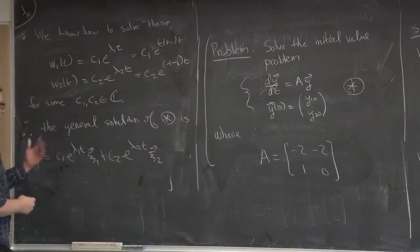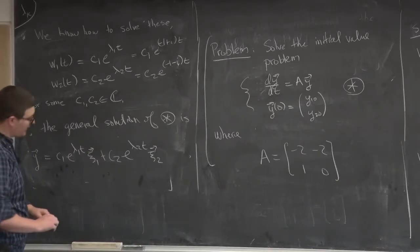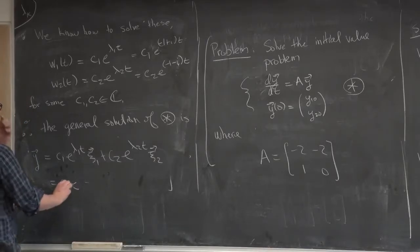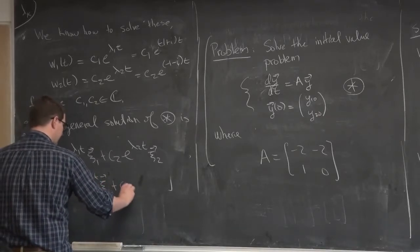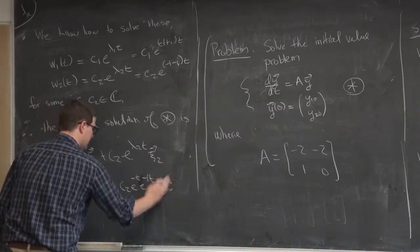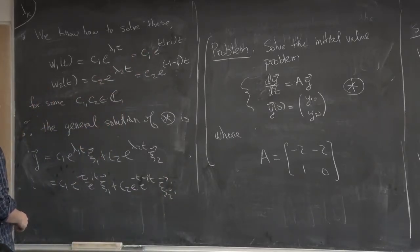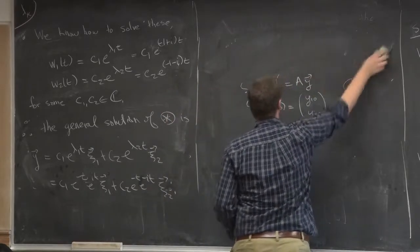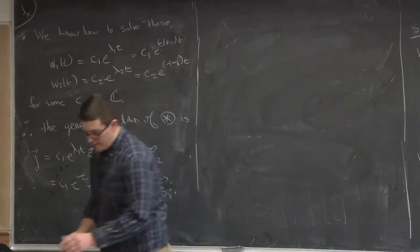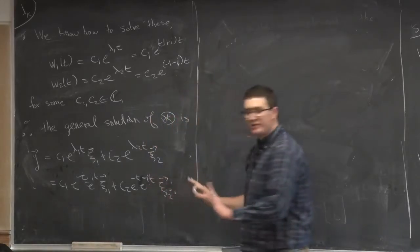So the general solution of ODE star is: y = C1·e^(lambda1·t)·(eigenvector C1) + C2·e^(lambda2·t)·(eigenvector C2). Writing it out: y = C1·e^(minus t)·e^(it)·(minus 1 plus i, 1) + C2·e^(minus t)·e^(minus it)·(minus 1 plus i, 1). The only unknowns are C1 and C2, which we determine using the initial conditions.